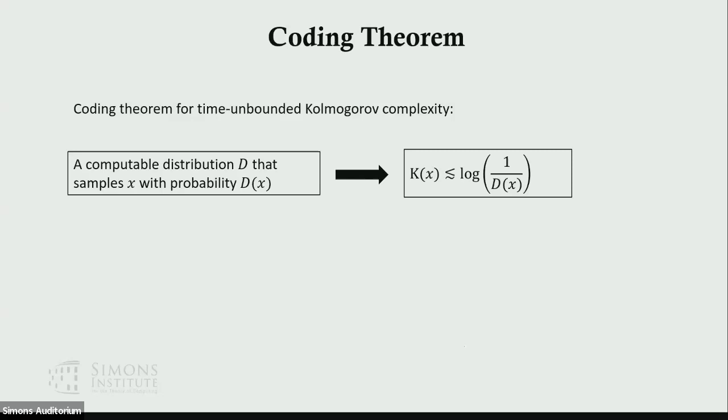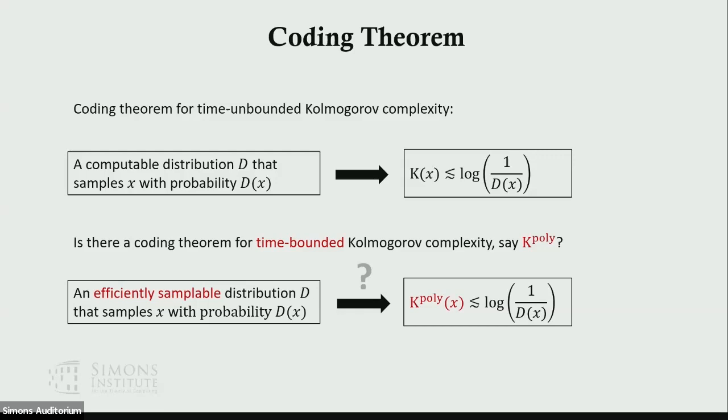Next I'm going to talk about some very important properties of Kolmogorov complexity. One such property is called the coding theorem. The coding theorem for time-unbounded Kolmogorov complexity says that if you have a computable distribution D that samples x with probability D(x), then the Kolmogorov complexity of x is at most log 1 over D(x). The proof of the coding theorem crucially relies on the time-unbounded feature of Kolmogorov complexity.